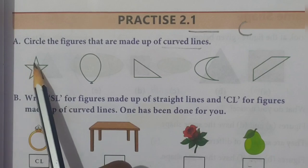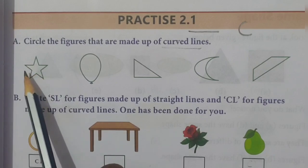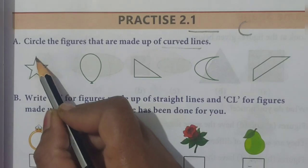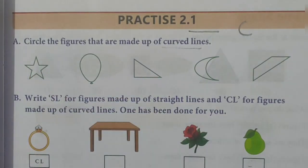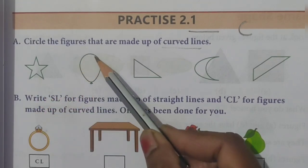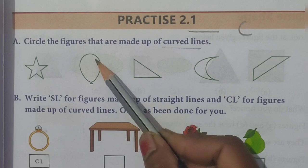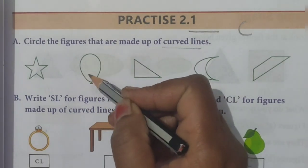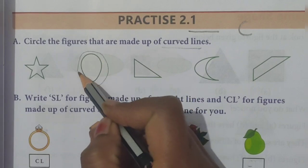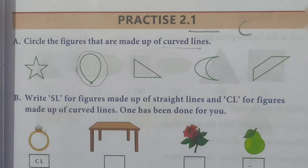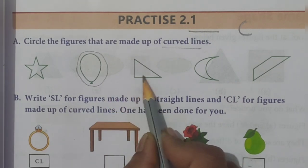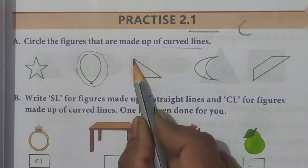If we see the star, it is actually made up of straight lines — there is no curved line. So we will not circle the star. Now see the balloon — the balloon has curved lines and no straight lines. Therefore we will circle the balloon because it is made up of curved lines. Now see the triangle — it is made up of three straight sides, so we will not circle the triangle.